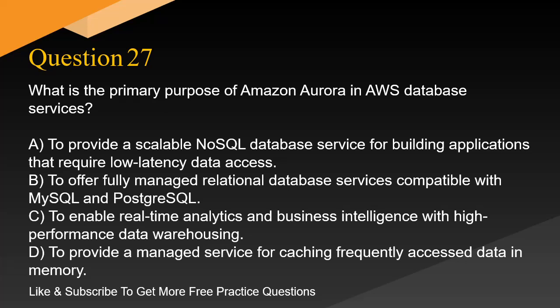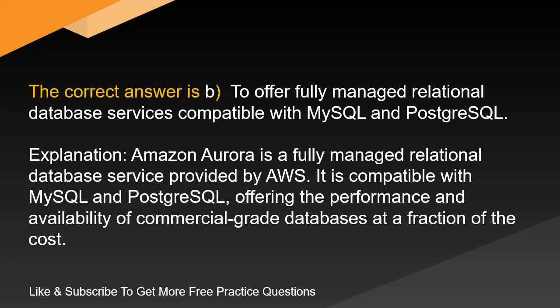Question 27. What is the primary purpose of Amazon Aurora in AWS database services? A. To provide a scalable NoSQL database service for building applications that require low-latency data access. B. To offer fully managed relational database services compatible with MySQL and PostgreSQL. C. To enable real-time analytics and business intelligence with high-performance data warehousing. D. To provide a managed service for caching frequently accessed data in memory. The correct answer is B: To offer fully managed relational database services compatible with MySQL and PostgreSQL. Amazon Aurora is a fully managed relational database service compatible with MySQL and PostgreSQL, offering the performance and availability of commercial-grade databases at a fraction of the cost.